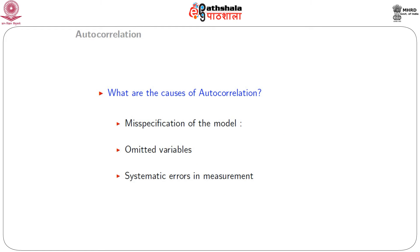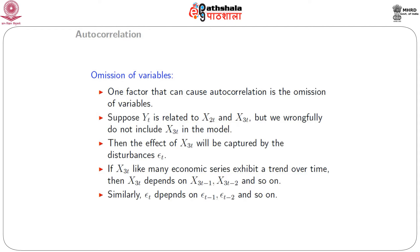The three major causes of autocorrelation are misspecification of a model, omitted variables from the model, or systematic errors in measurement introduced into the data set. When a variable is omitted — say y_t is related to x_{2t} and x_{3t} but we wrongfully exclude x_{3t} — the effect of x_{3t} is captured by the error terms epsilon_t. If x_{3t} exhibits a trend over time, then x_{3t} depends on x_{3,t-1}, x_{3,t-2}, and so on; similarly, epsilon_t depends on epsilon_{t-1}, epsilon_{t-2}, and so on.